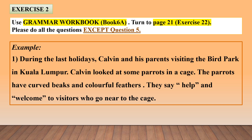So you will have to highlight, or if you want, you can underline the verb in the sentence. So 'visiting' is a verb. Continue — Kelvin 'looked.' So 'look' is a verb. Again, you will have to highlight or underline the verb. 'Look at some parrots in a cage.' The parrots 'have' — so 'have' is a verb. Subject: the parrots; verb: 'have.'